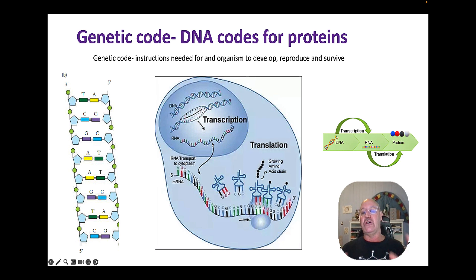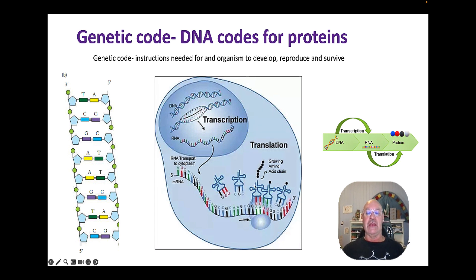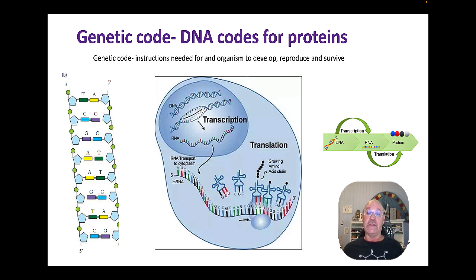I'll go through this in more detail in another video, but essentially the DNA remains in the nucleus and unzips to expose a gene. Free nucleotides then make a copy of that gene — that's called RNA. The RNA goes out to a ribosome where it gets read, and tRNA brings along amino acids. When amino acids are put together in a chain in a certain sequence, that produces the structural and functional proteins that make up every organism. So DNA is the blueprint for making proteins.